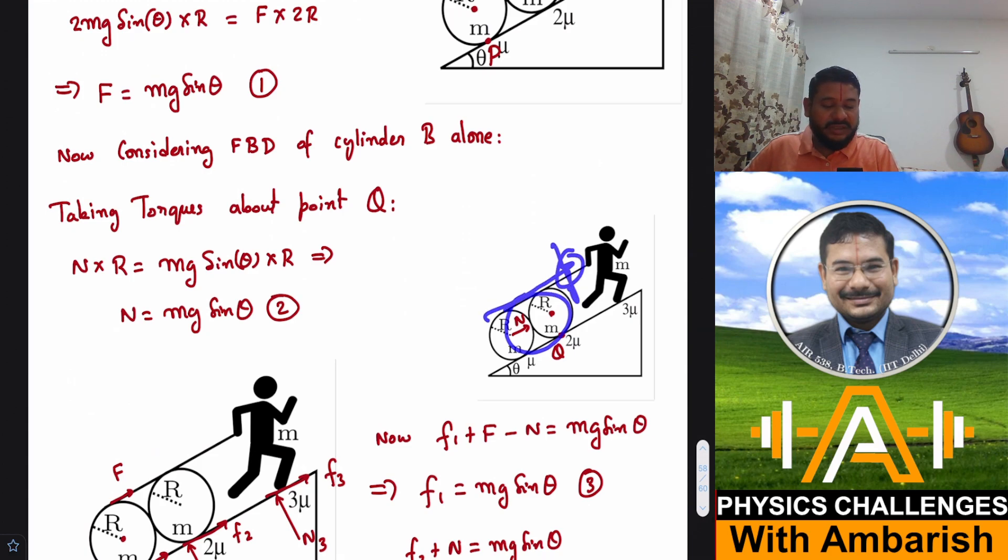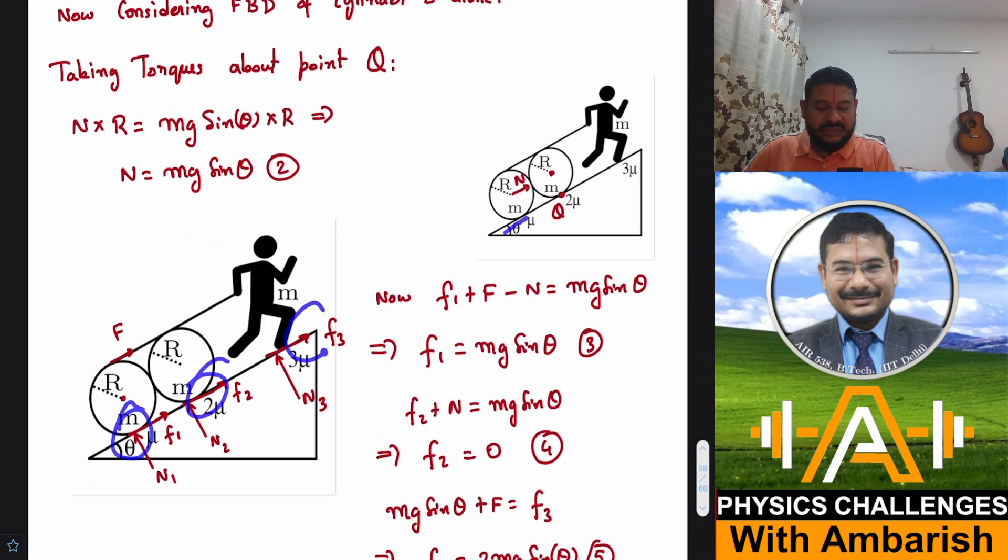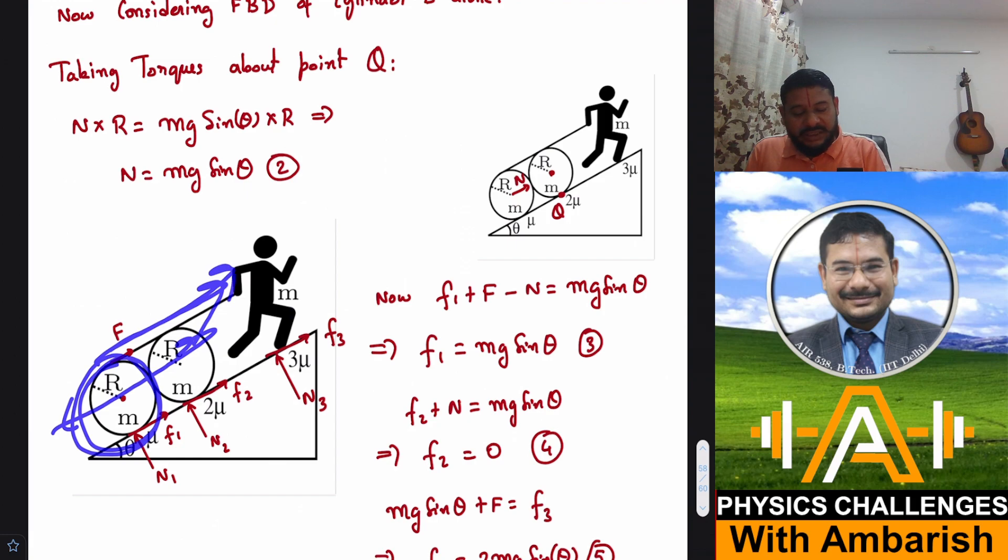I know the normal reaction, I know the pulling force, now I'll find the frictional forces. Let's say this friction is F1, this is F2, and this is F3. If I consider the FBD in this direction, there's capital F and small F1 frictional force, then mg sin θ, and normal reaction acting backwards.